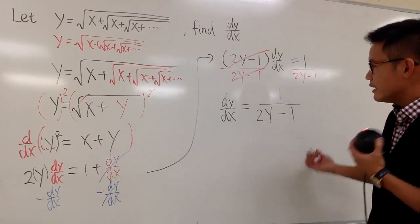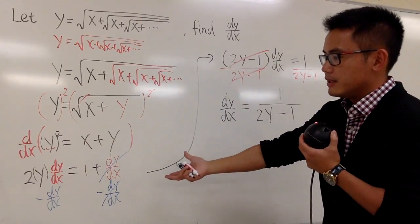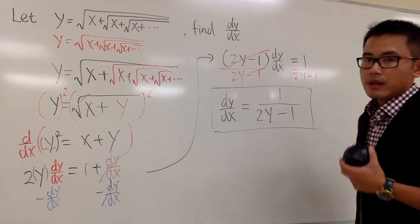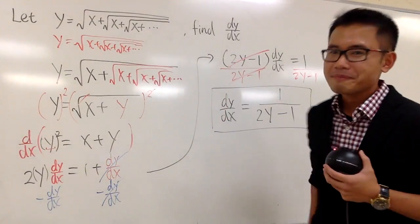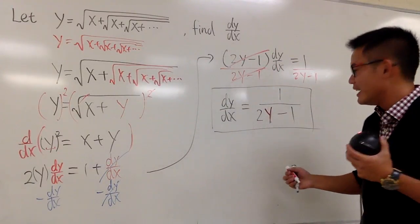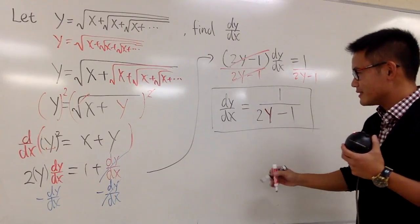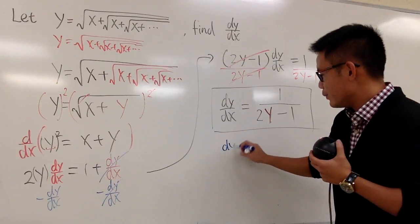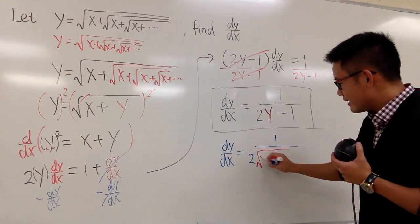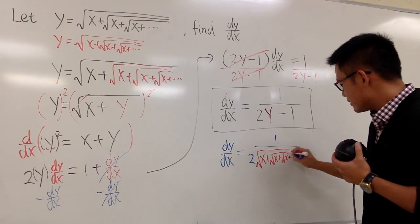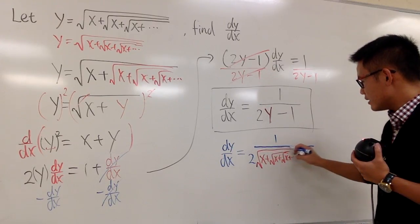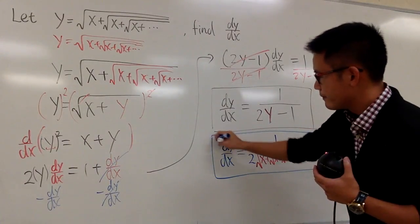Depending on how you would like the answer, when using implicit differentiation it's totally legitimate to leave your answer in terms of y. But if you would like, you can substitute back — just plug y = √(x + √(x + √(x + ...))) into the denominator. So dy/dx equals 1 over 2 times that whole nested square root expression, minus 1. If you want to impress someone, write that full version down for the answer. That's it!